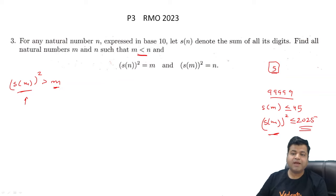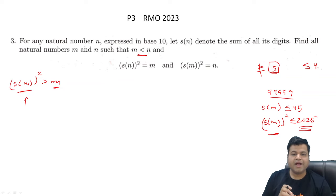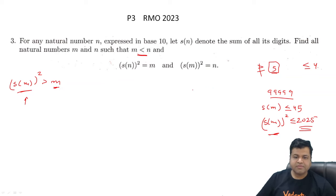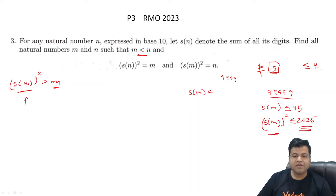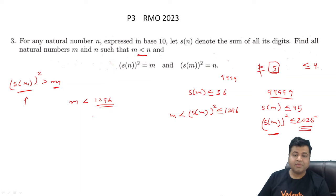This means the number of digits in M cannot be greater than or equal to 5. So M always has fewer than 5 digits — that is, the number of digits of M is at most 4. Now, for a 4-digit number, the maximum is 9999, so S(M) ≤ 36. Therefore S(M²) ≤ 36² = 1296. Since M = S(M²), we get M ≤ 1296.